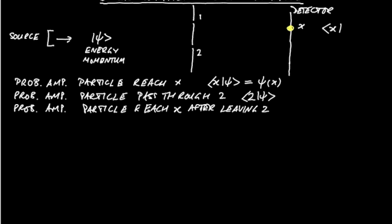In this case, what goes in the ket is the fact the particle has passed through slit 2 and what goes in the bra is the fact that it's going to reach x. So finally we can ask for the total probability amplitude.